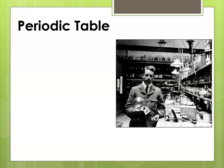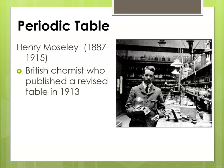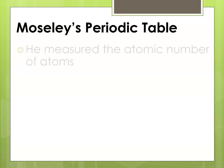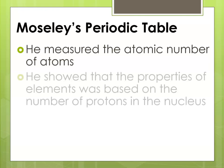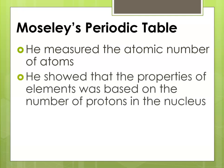The next person on the scene was Henry Moseley, a British chemist who published a revised table in 1913. He was studying alongside Ernest Rutherford in Rutherford's lab. Moseley measured the atomic number of atoms and determined that the properties of elements were based on the number of protons in the nucleus.